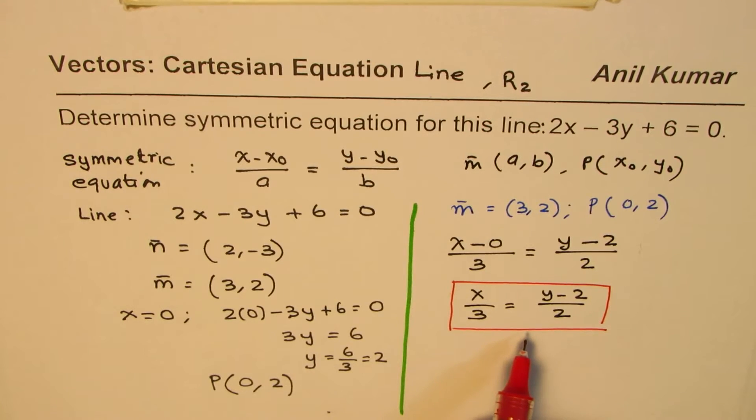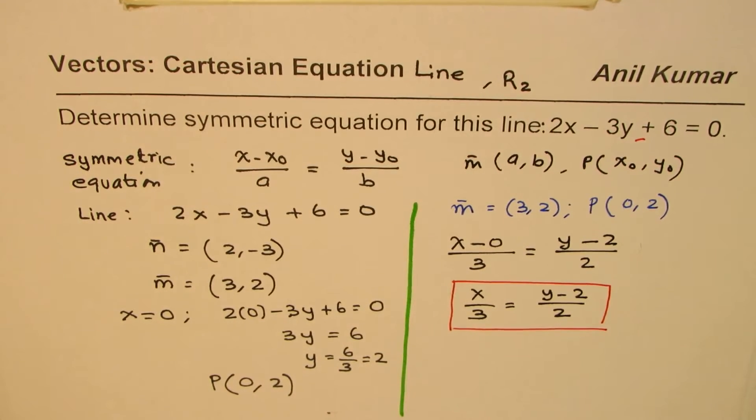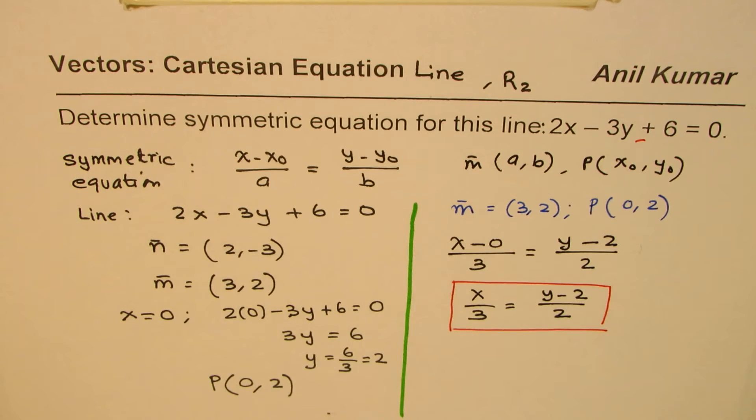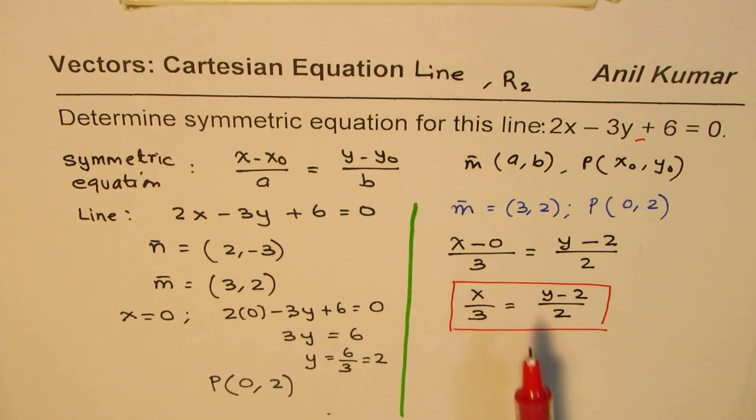Now, to check if this answer is right or wrong, you could just cross-multiply. If you cross-multiply, you will get your equation back. So, as an exercise, what you can do is, you can actually check if this equation is correct or not. By cross-multiplying, if you get that, then it is absolutely correct.